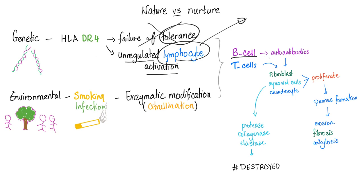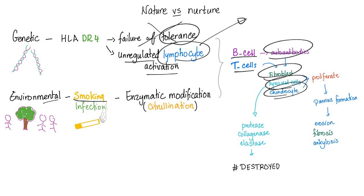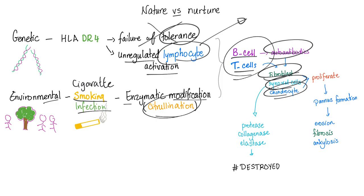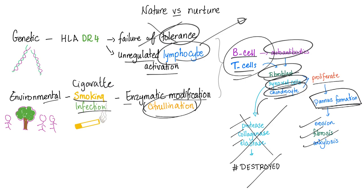B cells secrete autoantibodies; T cells stimulate fibroblasts, synovial cells, and chondrocytes. Environmental factors: cigarette smoking specifically, and infection. An enzymatic modification called citrullination triggers the immune response. B and T cells are stimulated, fibroblasts and synovial cells proliferate, forming pannus — granulation tissue — leading to erosion, fibrosis, and ankylosis. Enzymes involved include proteases, collagenase, and elastase, destroying cartilage and bone.